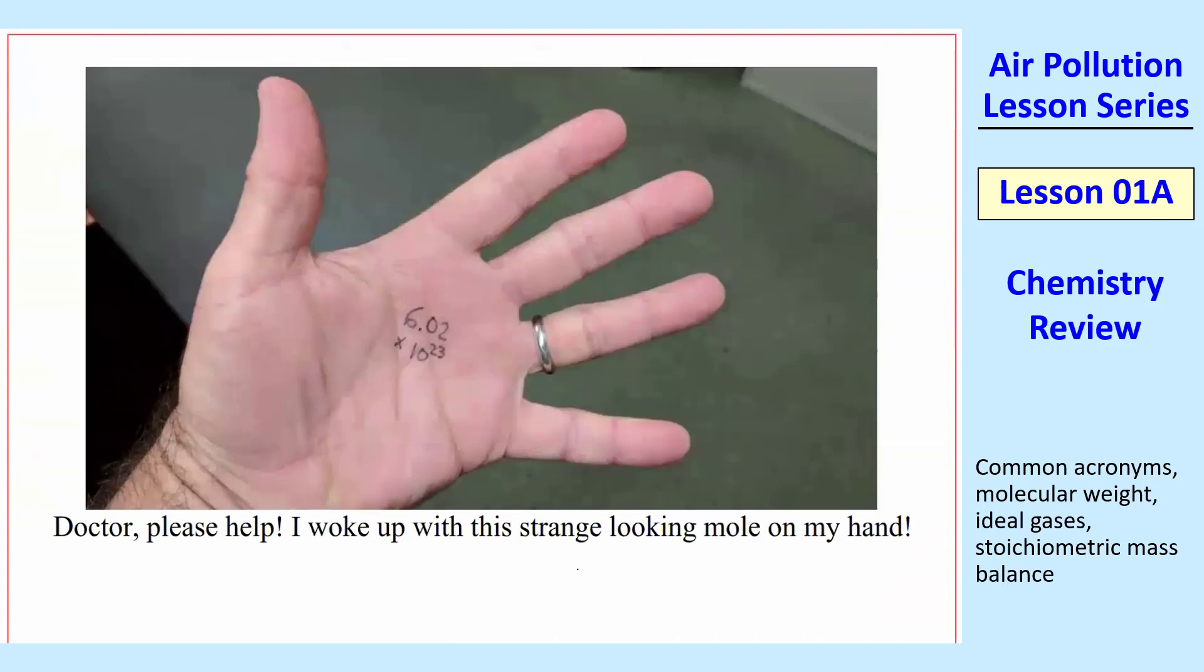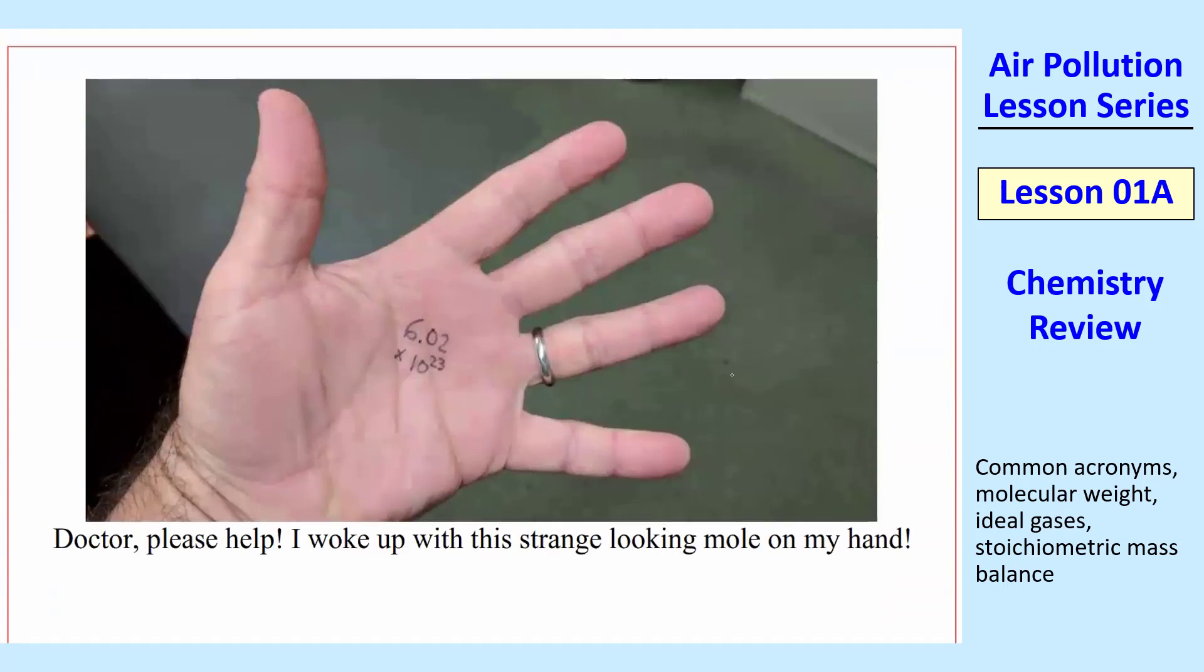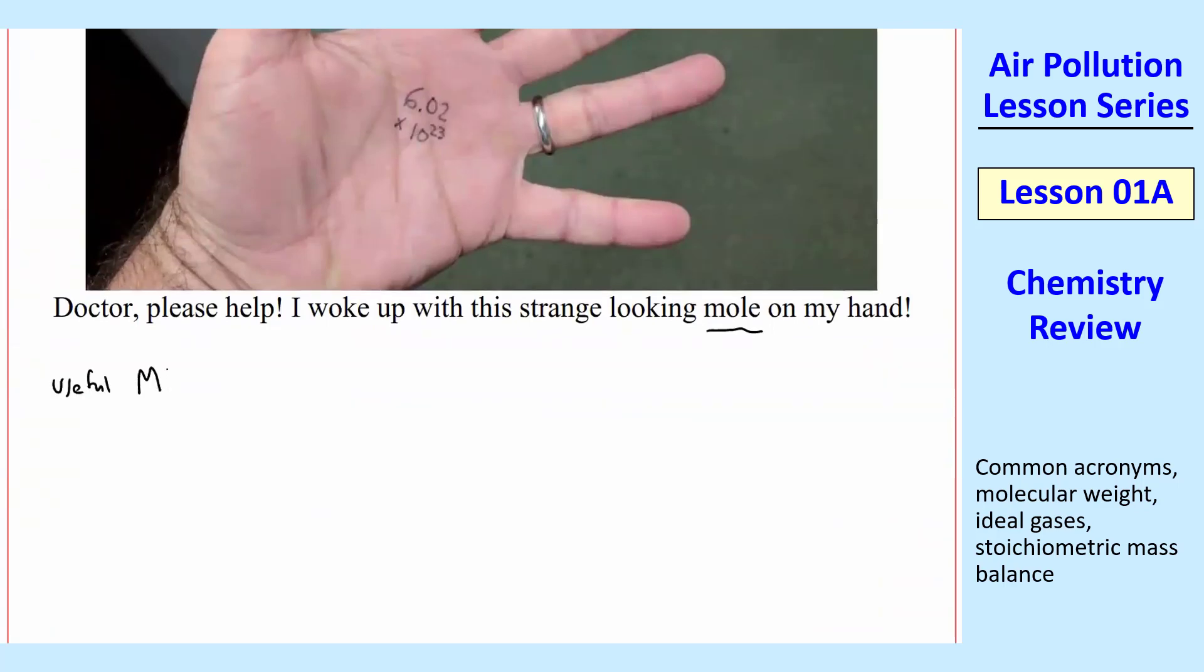And equation to convert is there. Oh, here's a picture. Doctor, please help. I woke up with this strange looking mole on my hand. Some useful molecular weights for air. Capital M of air is equal to 28.97 gram per mole, or kilogram per mole if that unit is better for you in a particular problem.